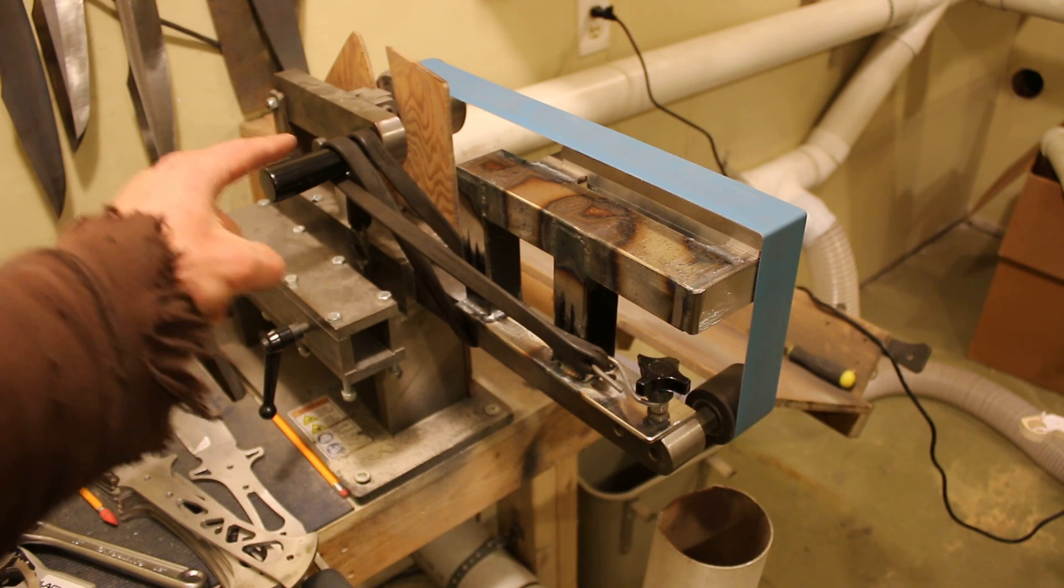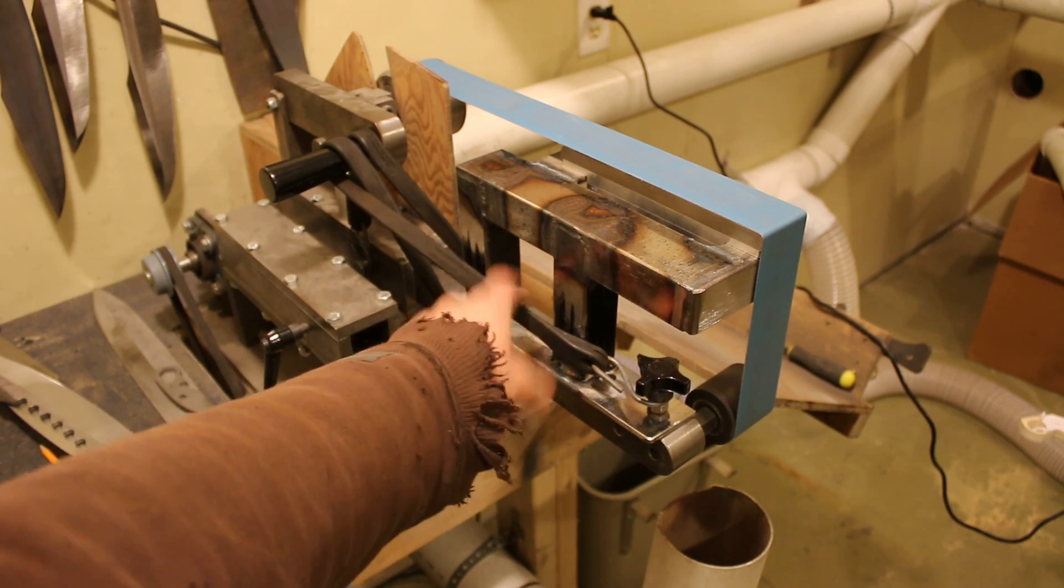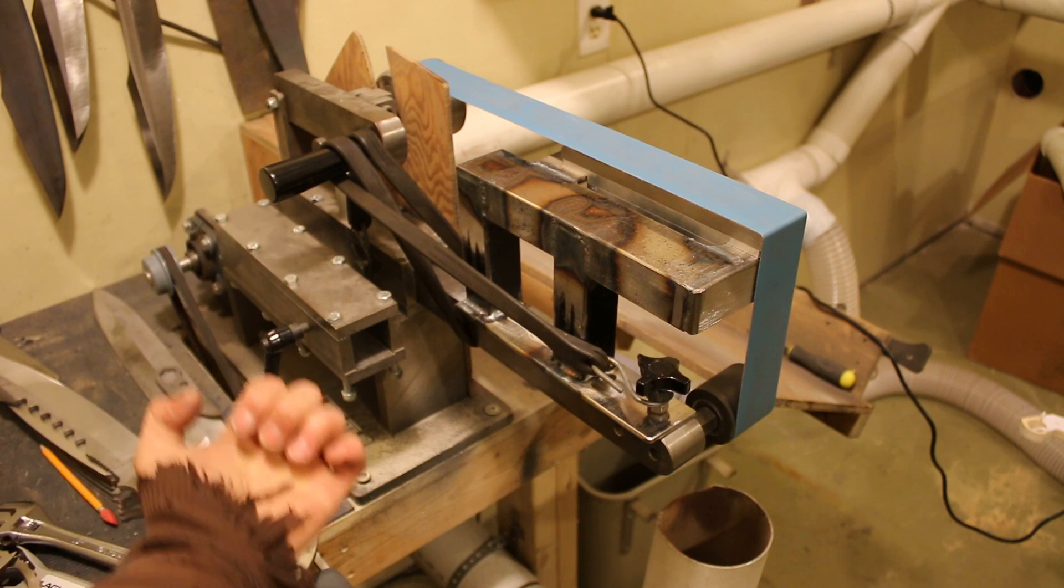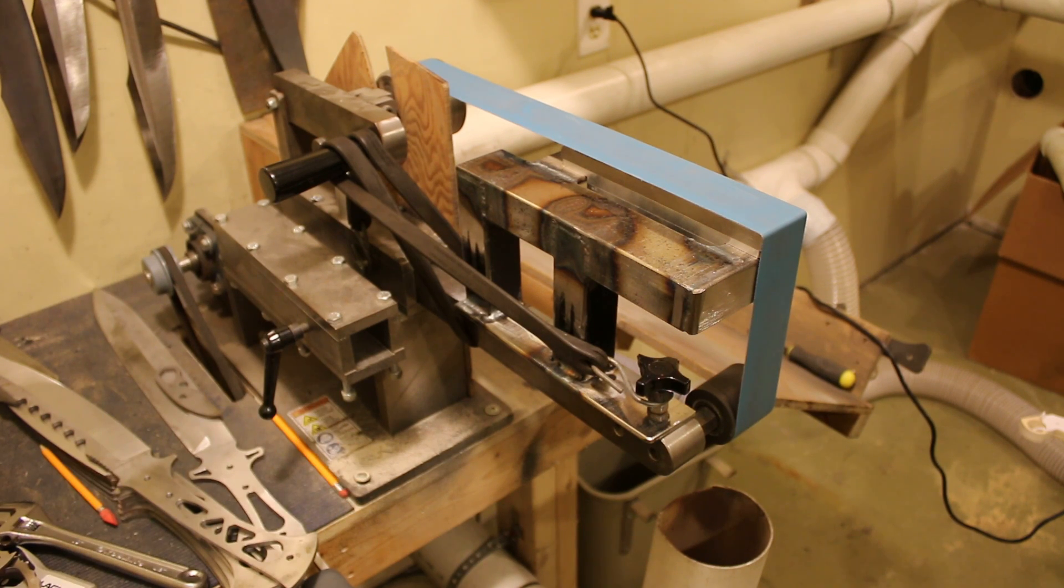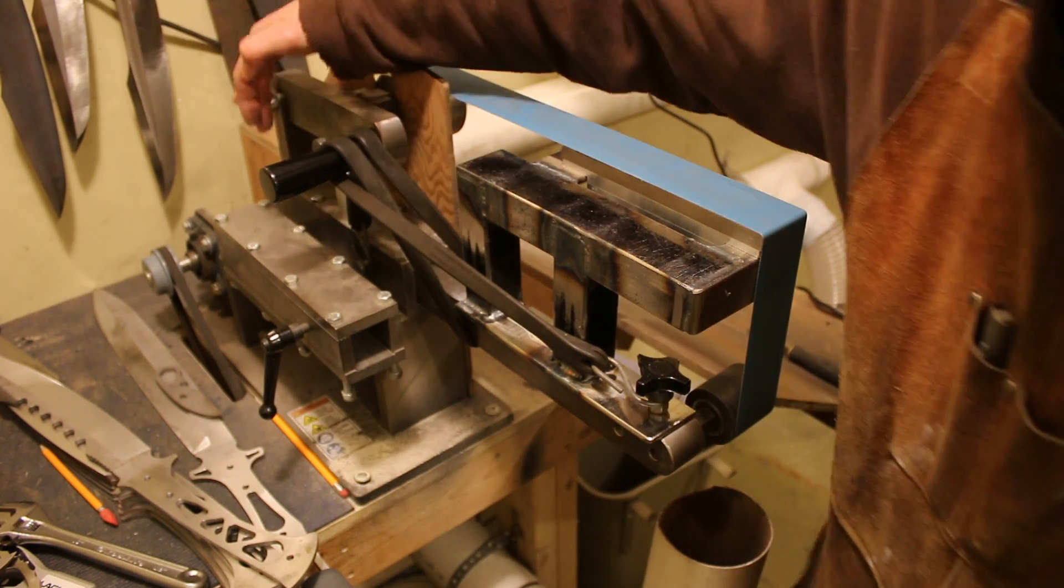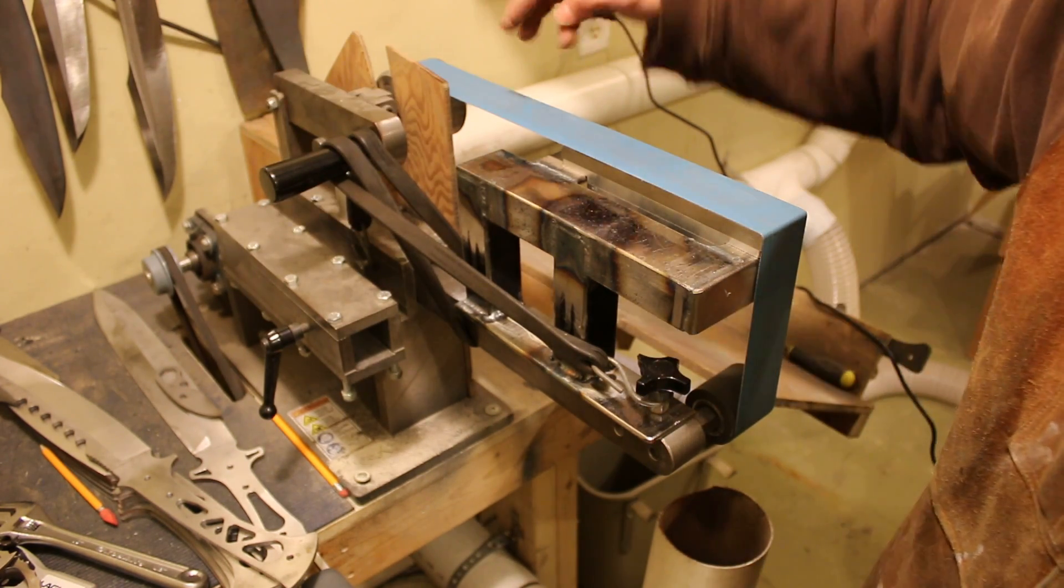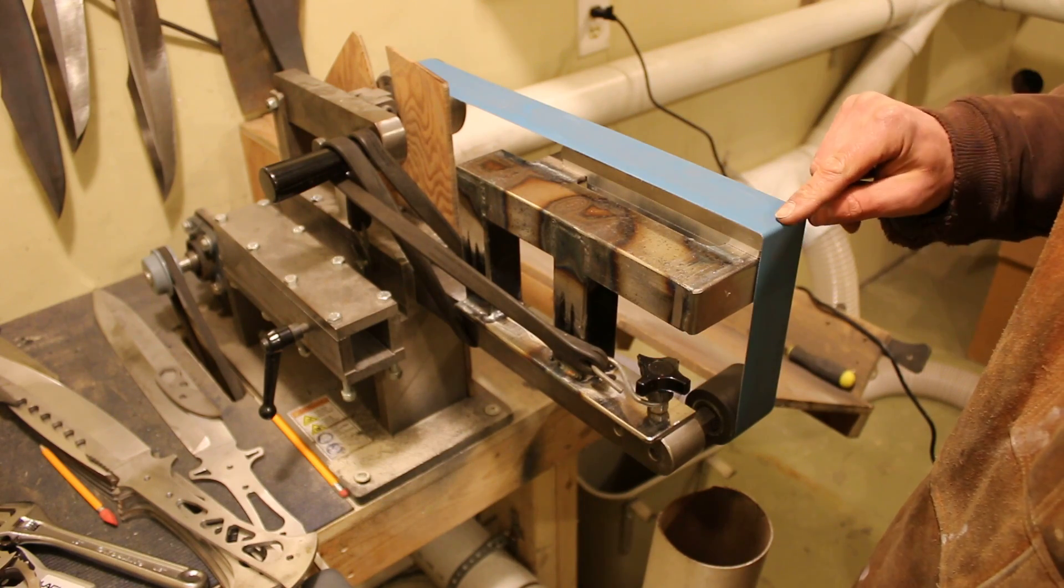So what I ended up doing was I just added this bungee cord to increase the downward force and basically reduce the spring force of the coil spring here, so that I could get less pressure on this corner.